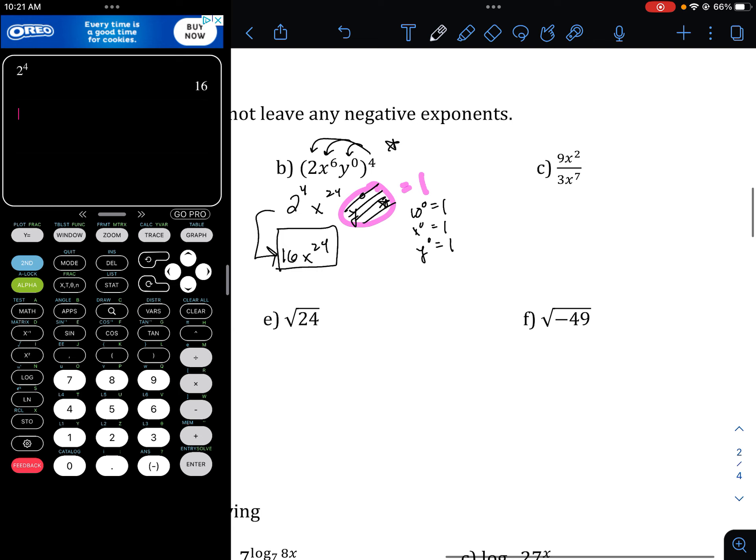Letter C, 9 over 3, that can reduce to 3, and also think about the x's. We have 7 of them down below, we have 2 of them up top. Cancel, cancel, cancel, cancel. There are 5 of them left down below. That's one way to look at those.